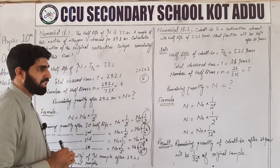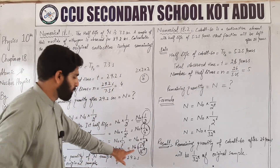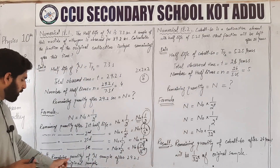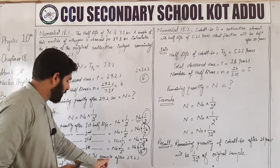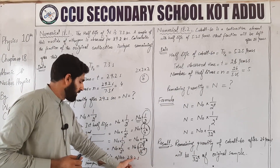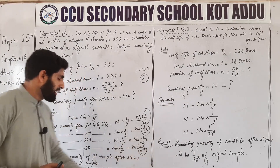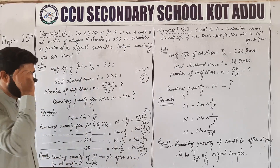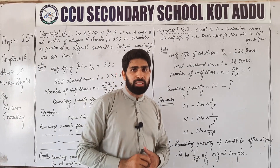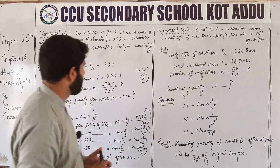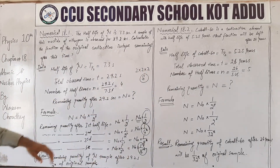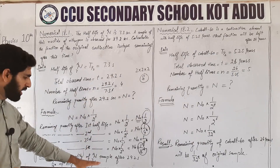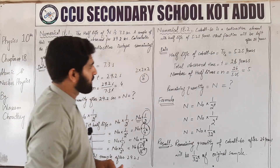تو result یہ ہے: Remaining quantity of Nitrogen sample after 29.2 seconds will be 1/16 of original sample — یعنی ایک بٹا سولہ حصہ باقی بچے گا۔ اس question میں half life بھی دی گئی تھی، observed time بھی تھا، اور remaining quantity بھی ہم نے نکال لی۔